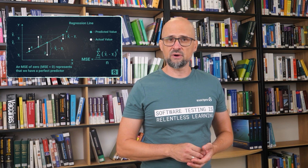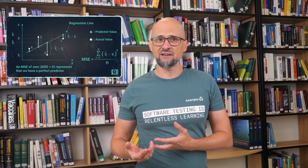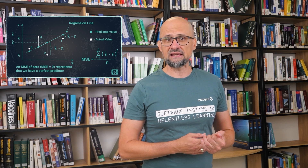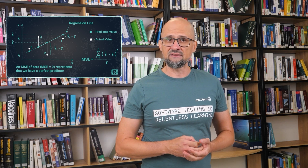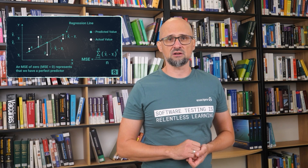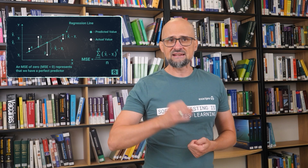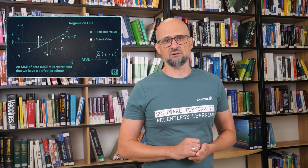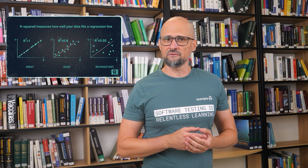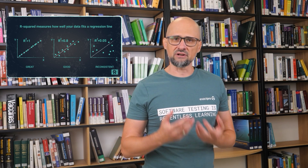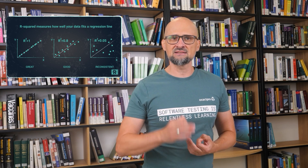For supervised regression models, the metrics represent how well the regression line fits the actual data points. Mean squared error (MSE) is the average of the squared differences between the actual value and the predicted value. The value of MSE is always positive, and a value closer to 0 suggests a better regression model. By squaring the difference, it ensures positive and negative errors do not cancel each other out. R-squared, also known as the determination coefficient, is a measure of how well the regression model fits the dependent variables.